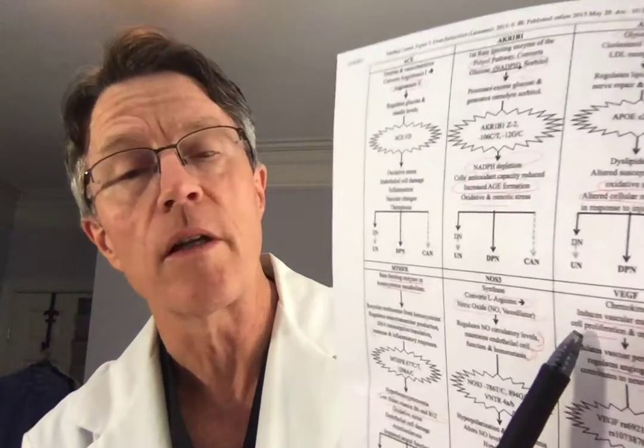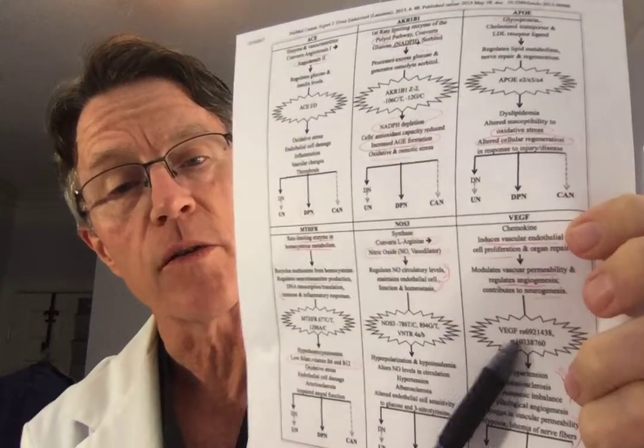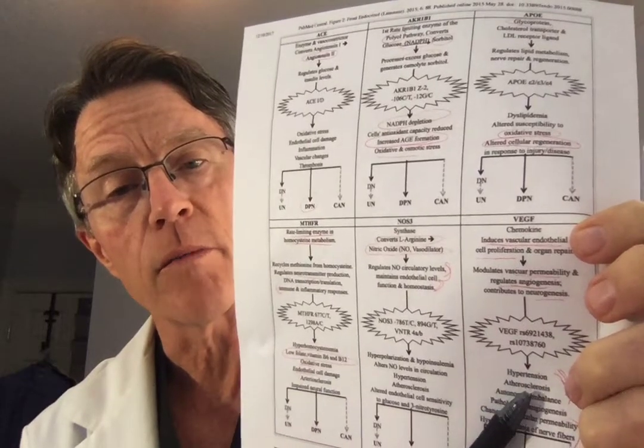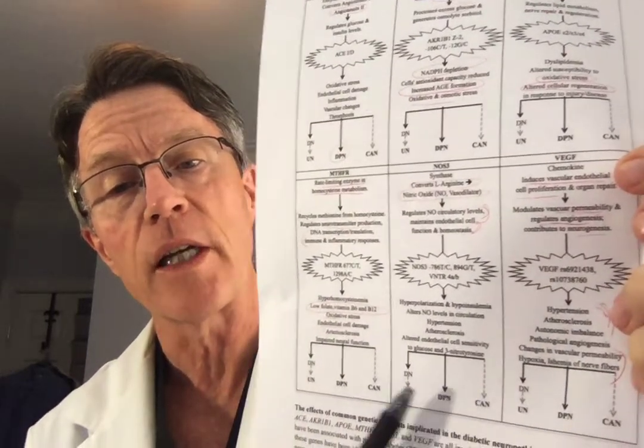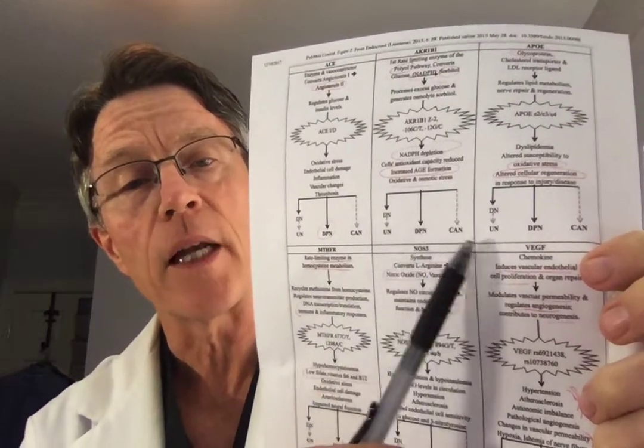VEGF — vascular endothelial cell proliferation — is involved in angiogenesis, which just means making new arteries. Angiogenesis is a big deal with cancer prevention; a large increase in vessel development is usually not healthy. In this context, VEGF represents more pathology associated with vessels that support the nerves — micro vessels that support the nerves — all leading to diabetic neuropathy.